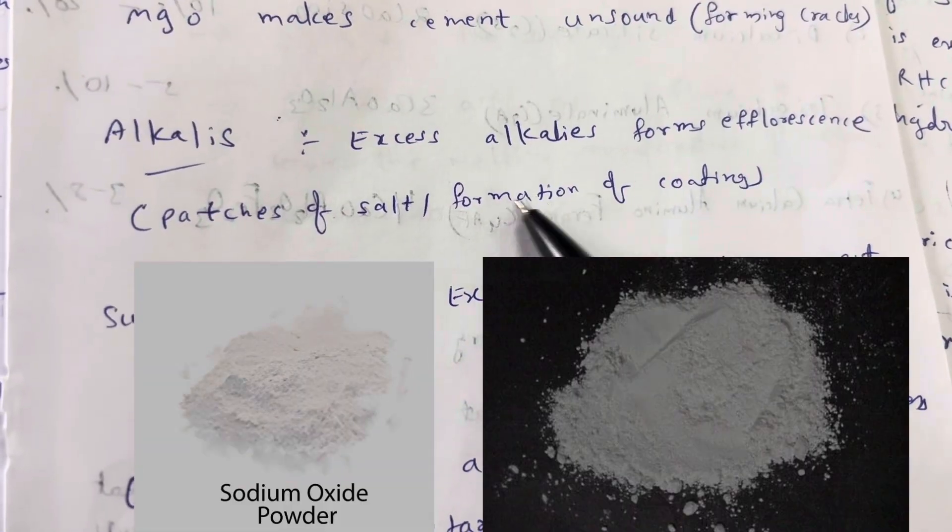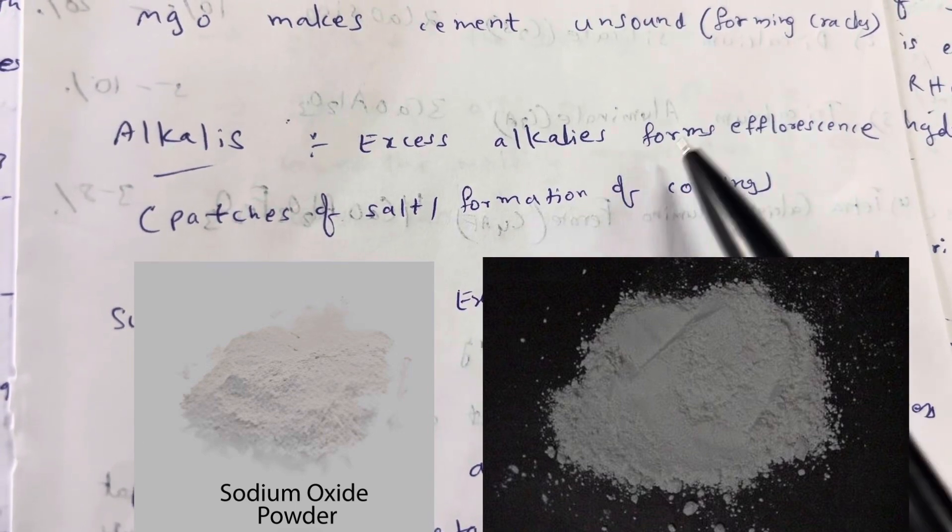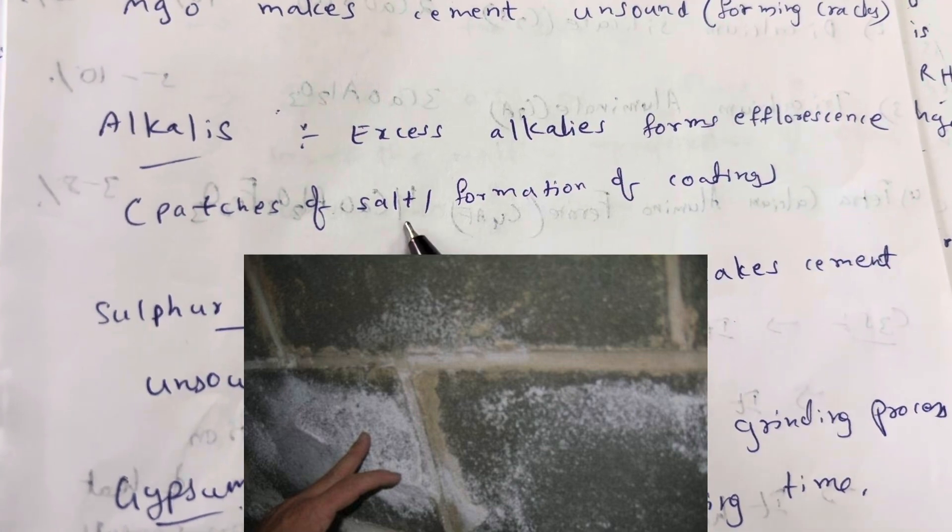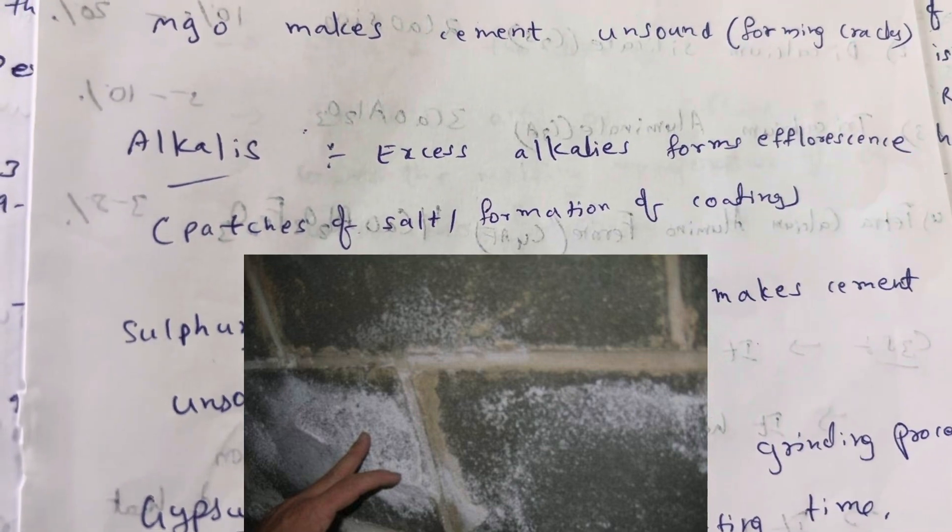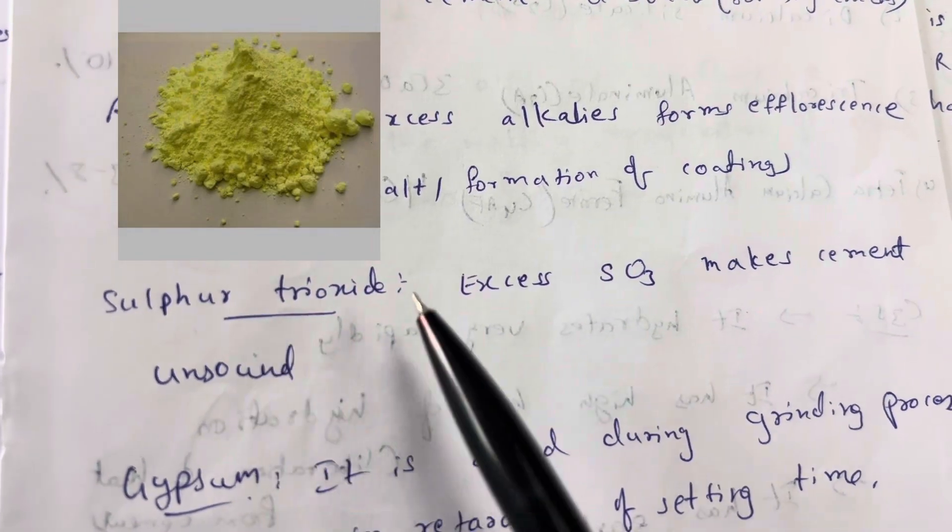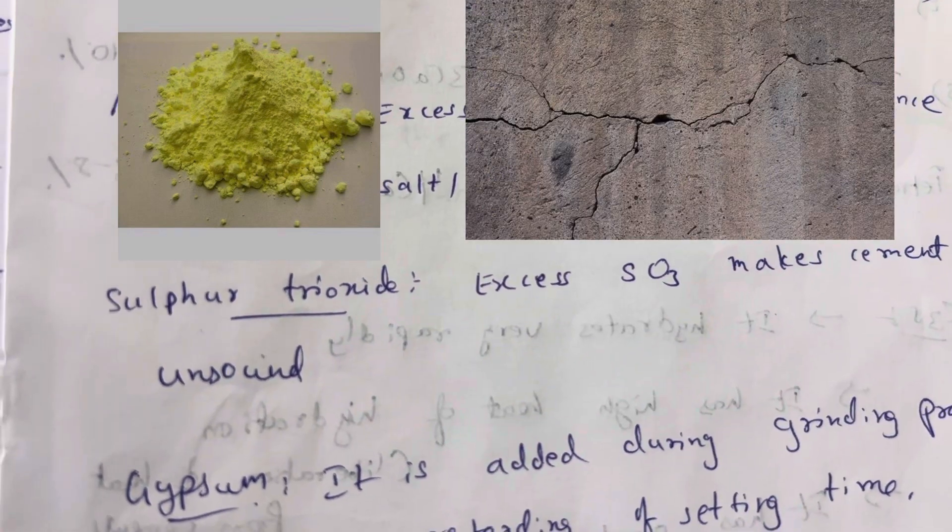Alkalis: if there are excess alkalis in the cement, it forms efflorescence. Efflorescence means patches of salt or formation of coating. Sulfur trioxide: excess sulfur trioxide makes cement unsound, meaning cracks are formed.